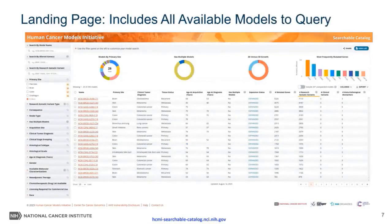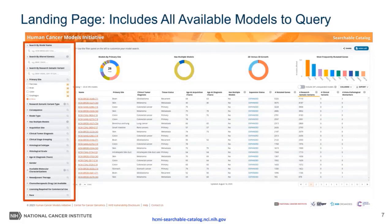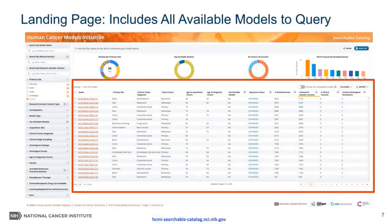The HCMI Searchable Catalog was developed to provide a public-facing online catalog to query and identify HCMI next-generation cancer models available to the research community. It contains model data from all consortium members, including model information, a subset of collected clinical data, distributor information, and molecular characterization data. The catalog is updated as data become available. The landing page lists all available models — currently 295 — and the left-hand side contains searchable data elements, while the main viewing table is dynamic and updates as you select data of interest.